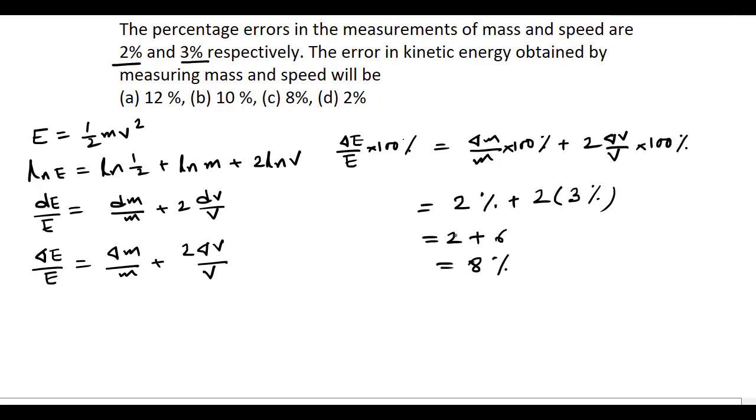So the error in the measurement of kinetic energy is 8 percent, which is the correct answer.